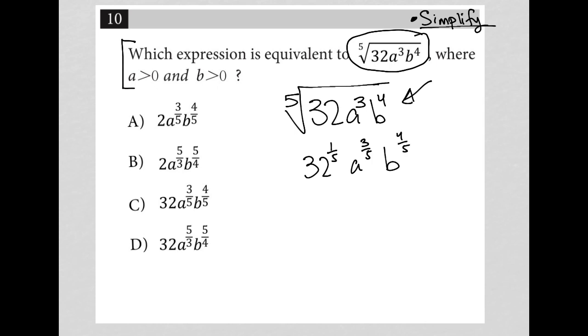32 to the one fifth is two. How do I know that? Well because two to the fifth is 32. So 32 to the one fifth is two which just goes back that way. In fact I can write it here fifth root of 32 is equal to two. So this is the relationship. So 32 to the one fifth is equal to two.